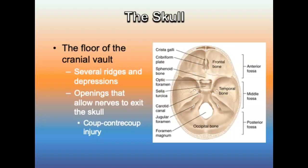The floor of the cranial vault consists of several ridges and depressions with openings that allow nerves to exit the skull. In a coup-contrecoup injury, the brain impacts two sides of the skull. Lacerations from the skull floor can occur, along with contusions from contact with the frontal and occipital bones.